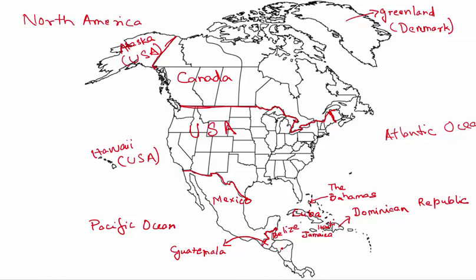Below Belize and Guatemala, you'll see two more countries. The larger one on the eastern side, again facing the Atlantic Ocean, is Honduras. The one on the western side is El Salvador.